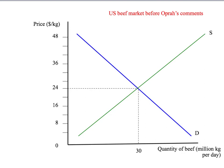The price of beef was, let's say, around $24 per kilogram, and there was perhaps 30 million kilograms of beef sold per day in the United States. So we have our initial equilibrium here, our initial equilibrium price, and our initial equilibrium quantity.